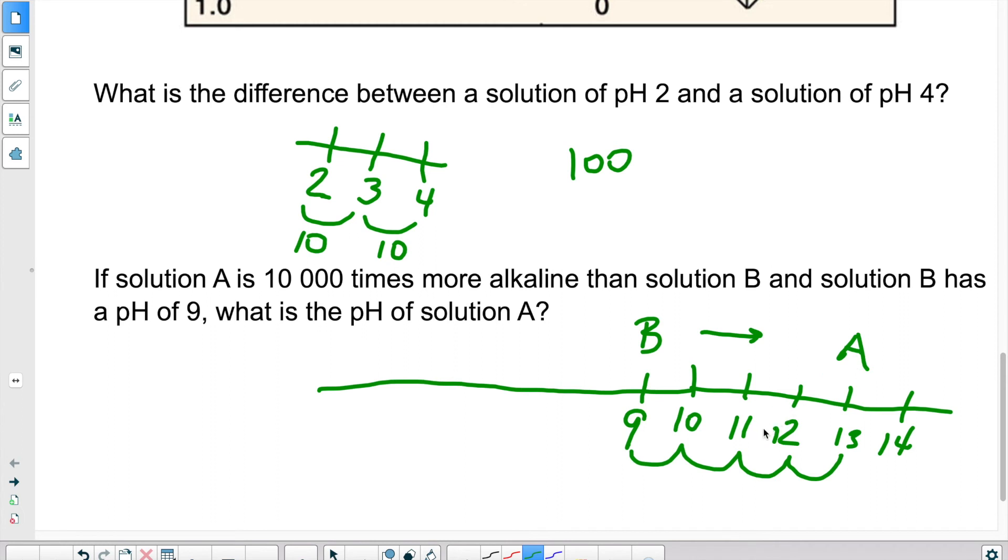So that's how you analyze it. Remember, it's always times 10. So you count 10, 100, 1,000, 10,000. We land on pH 13. So solution A has a pH of 13.